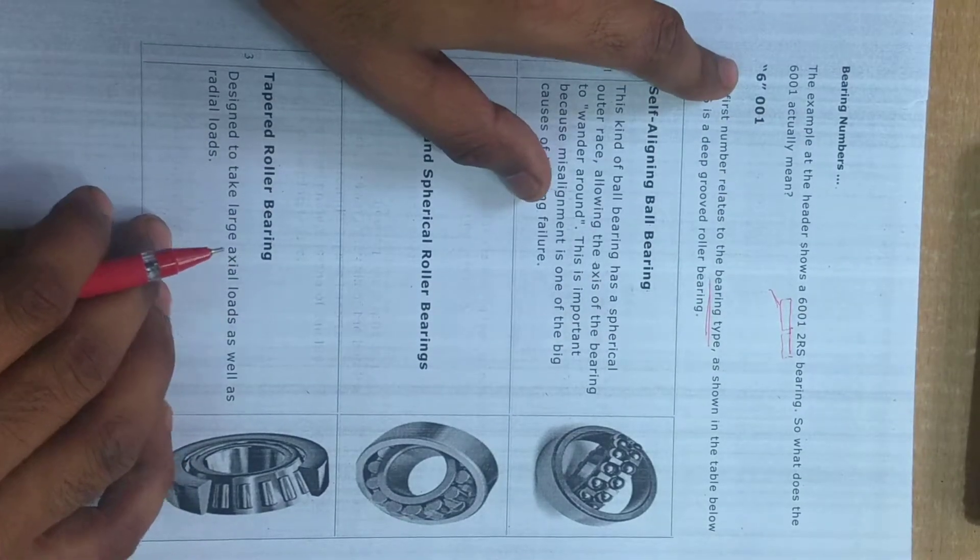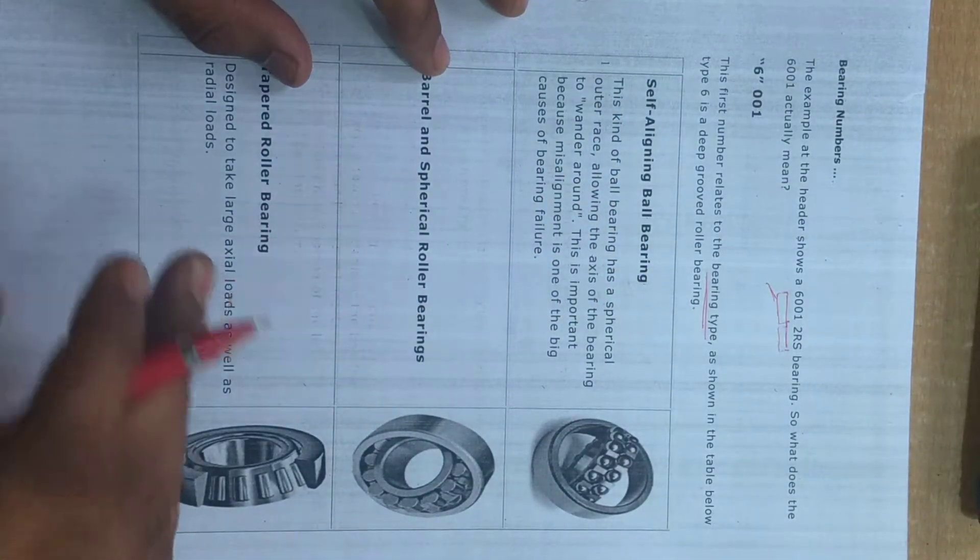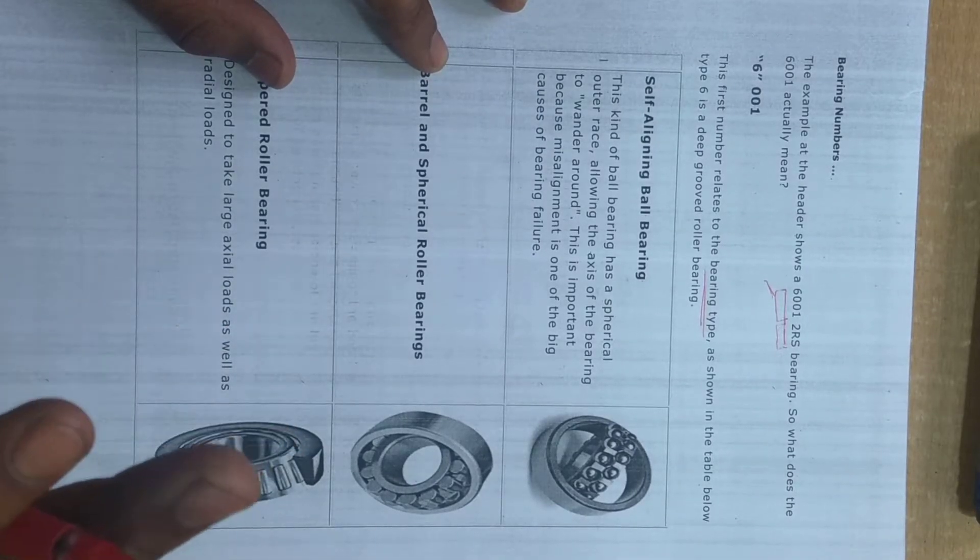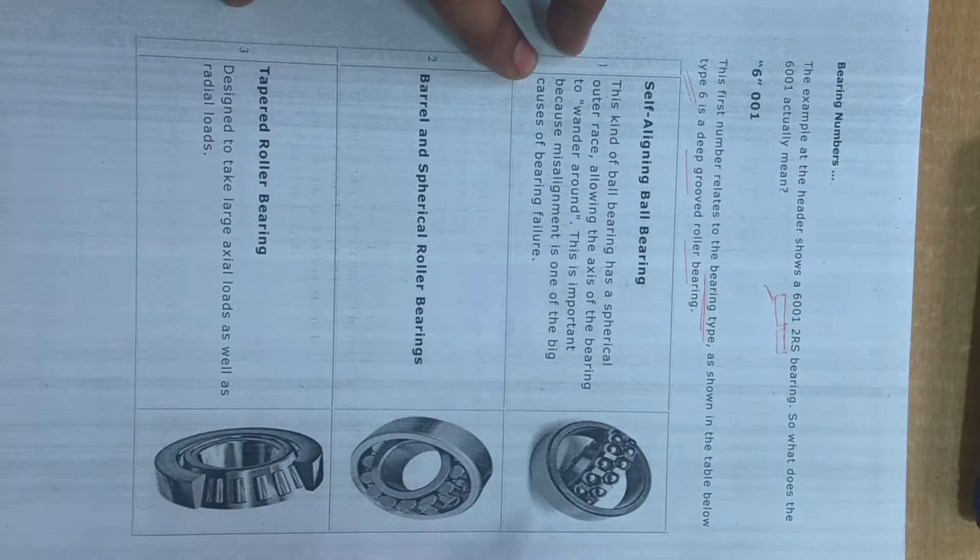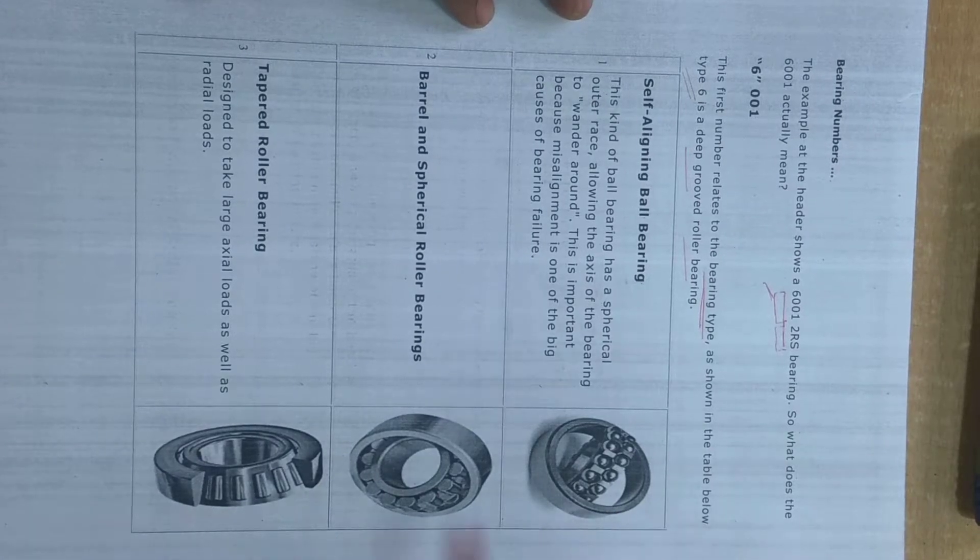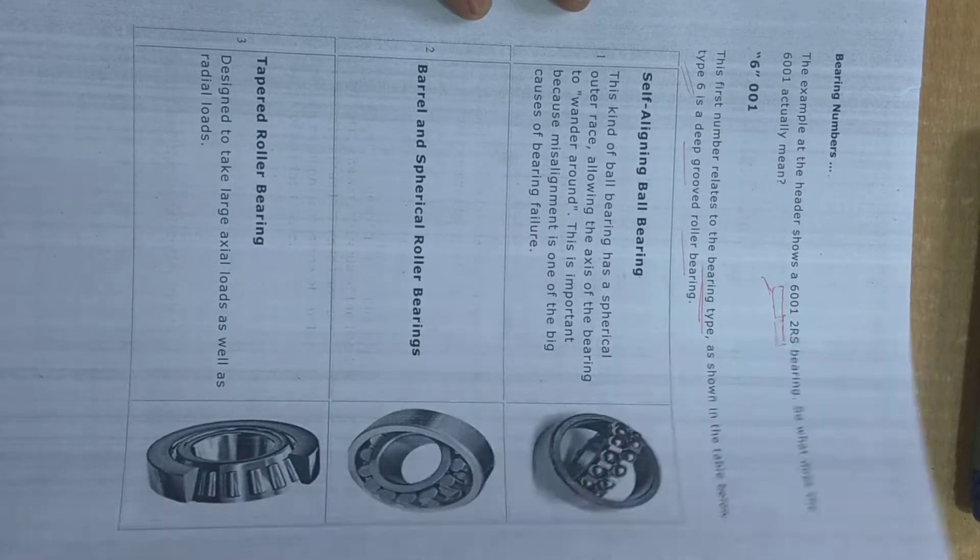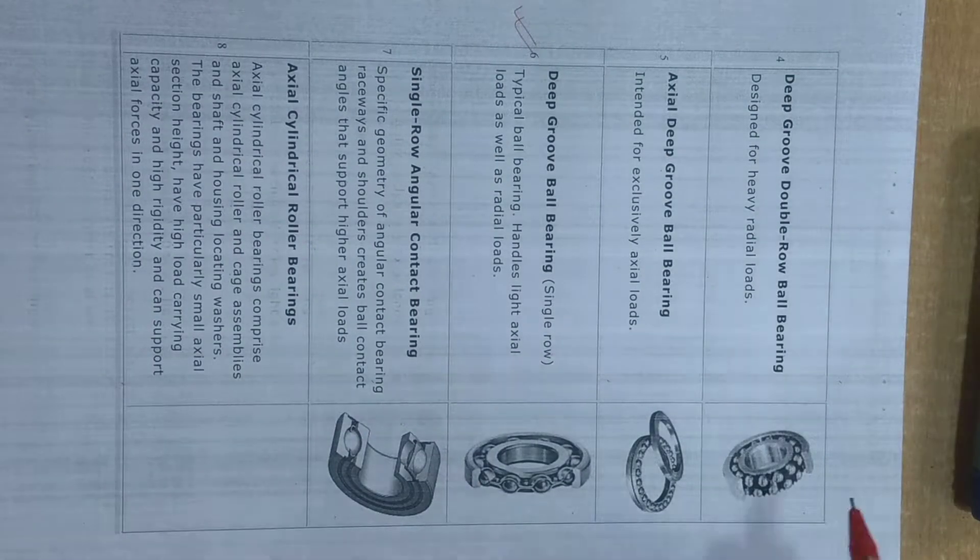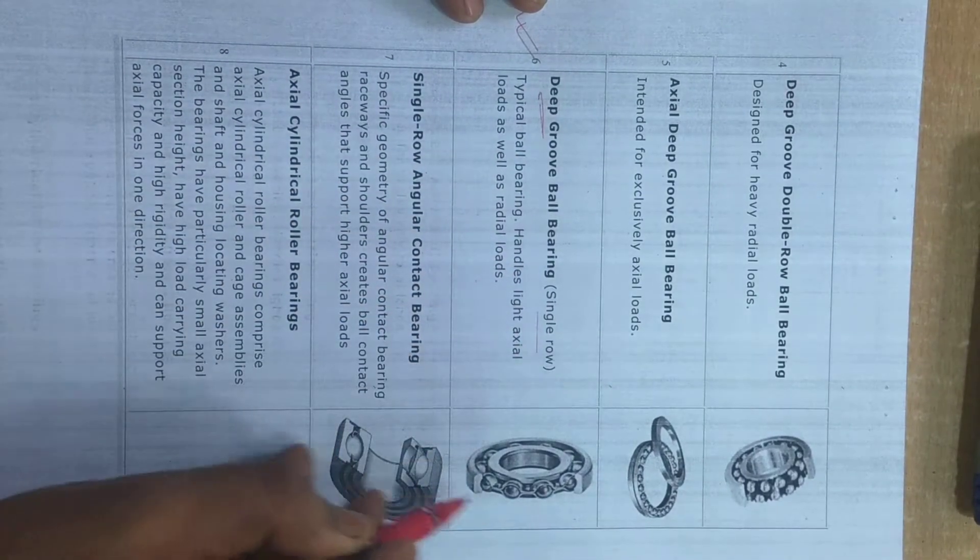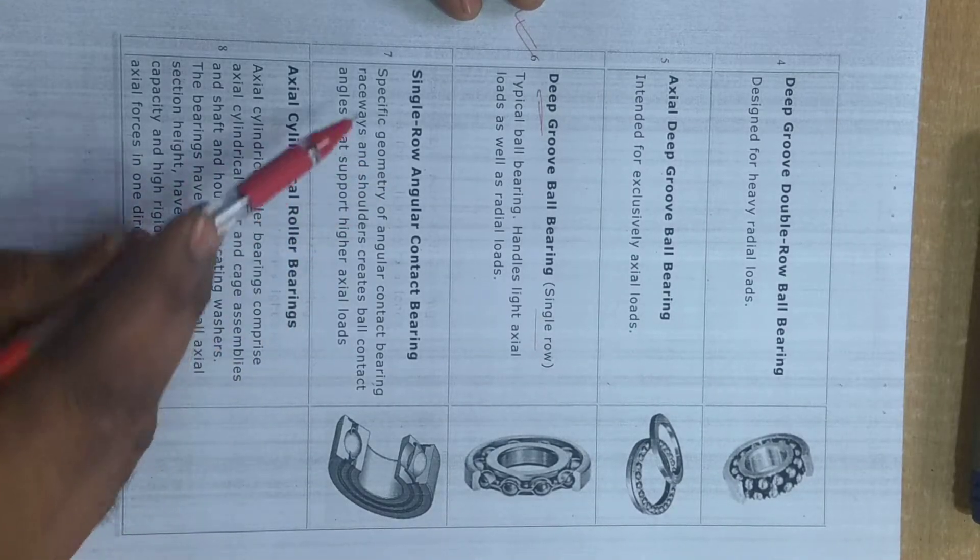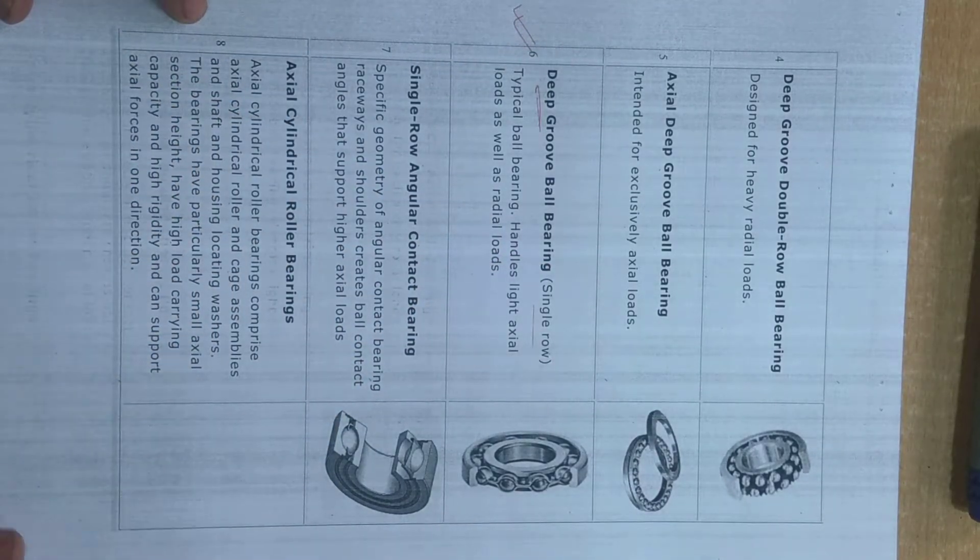For example, we have taken this number, 6001. The first number indicates the bearing type, which type of bearing we are using in our plant. The very common, mostly used bearing is a deep groove ball bearing, that is type 6. Other bearings are shown in the figure, like self-aligned ball bearing, barrel and spherical roller, tapper roller, and a few more. Deep groove ball bearing single row is our main concern. This is how it looks. The first number is mostly 6, be focused.